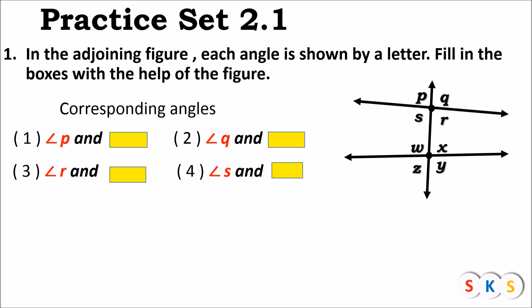Look at this figure. Angle P and angle W is one pair of corresponding angles. Angle S and angle Z is another pair of corresponding angles. Angle Q and angle X is another pair of corresponding angles. Angle R and angle Y is the next pair of corresponding angles.